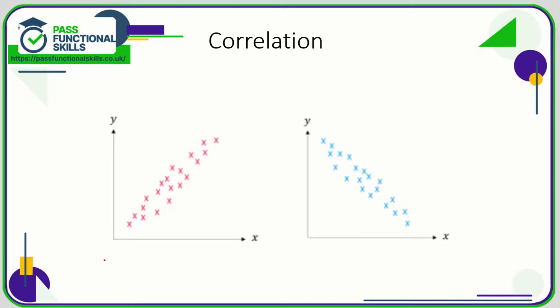Let's take a look at correlation. There are two types of correlation: positive and negative. On the left here, this is an example of positive correlation because we can generally see a pattern that as the x values increase, the y values increase.